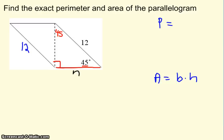Opposite of my 45s are both n. Opposite of my 90 is n root 2. So it looks like I have a little work to do to solve for n because I have 12 equals n root 2.